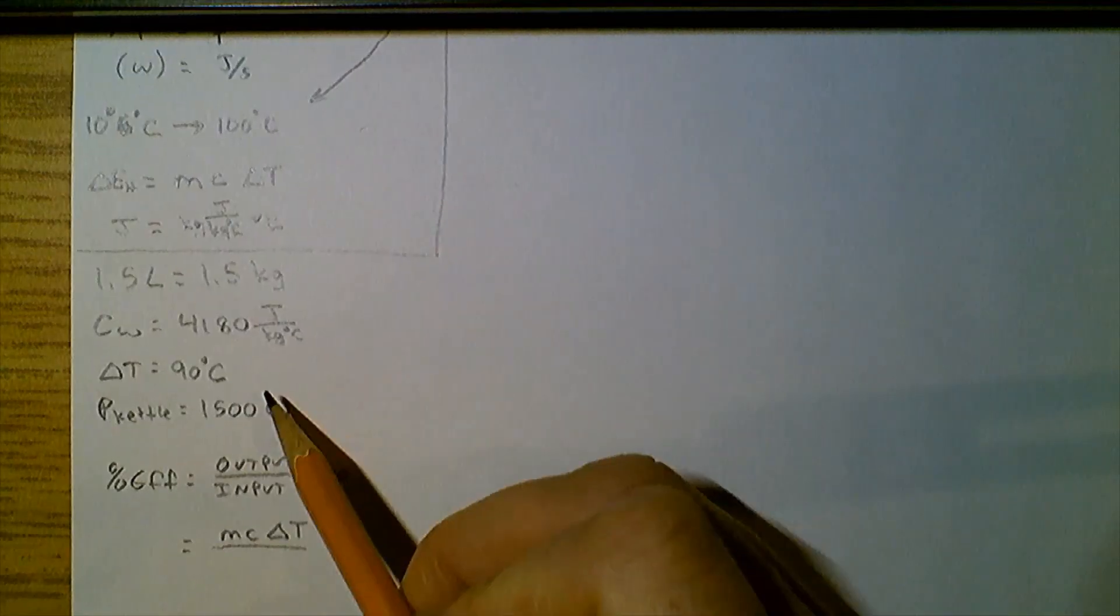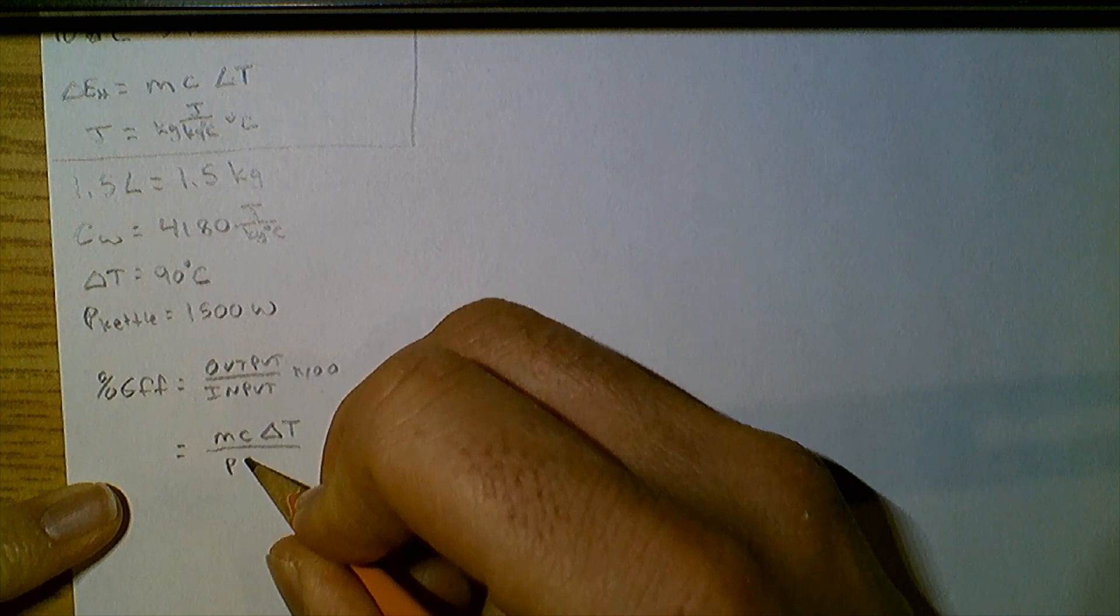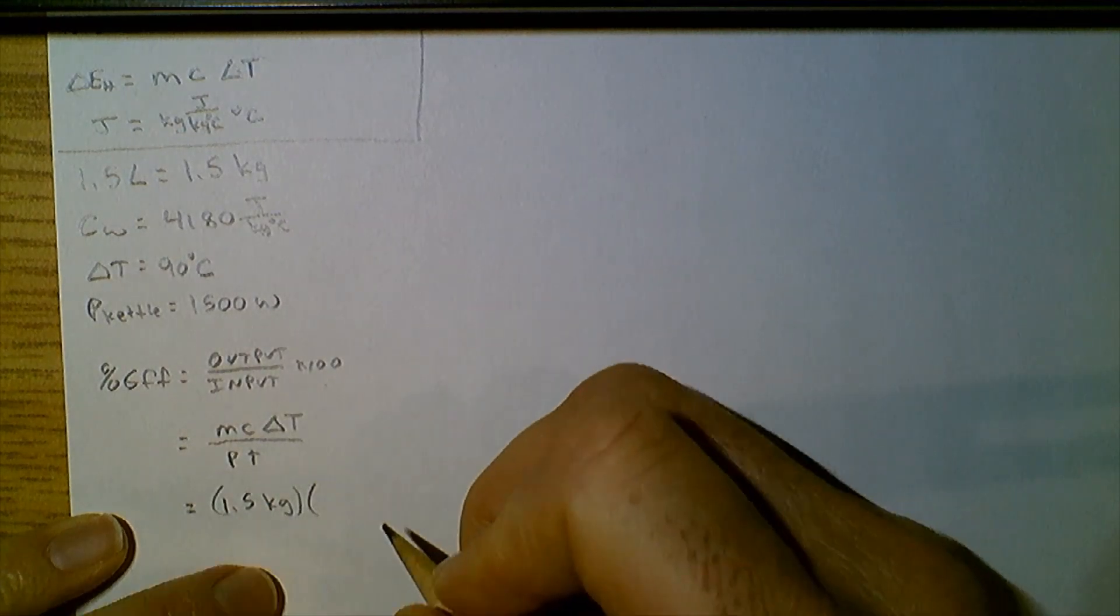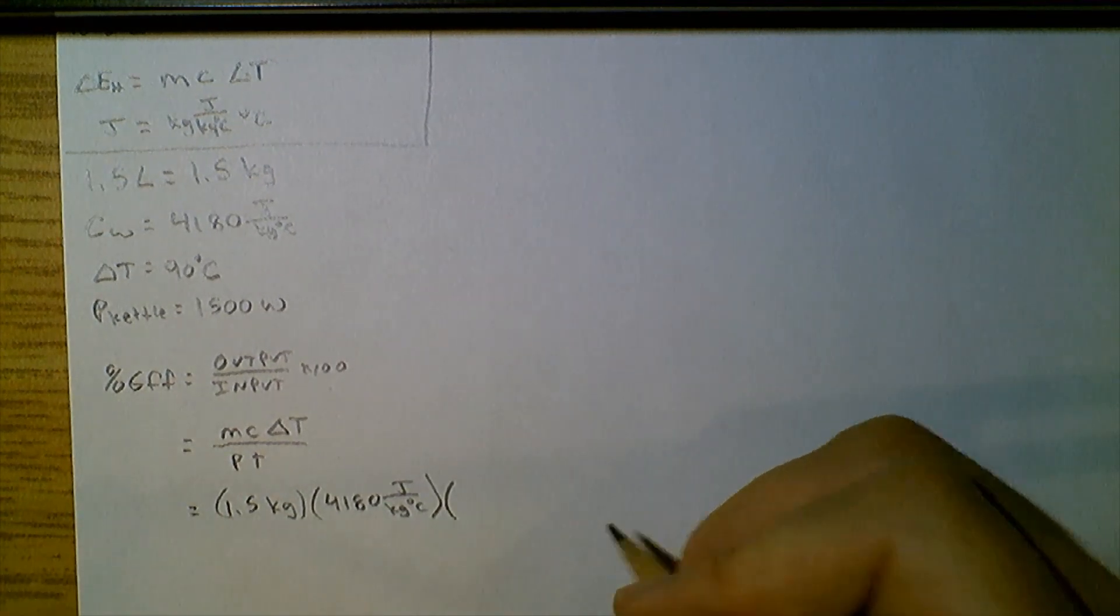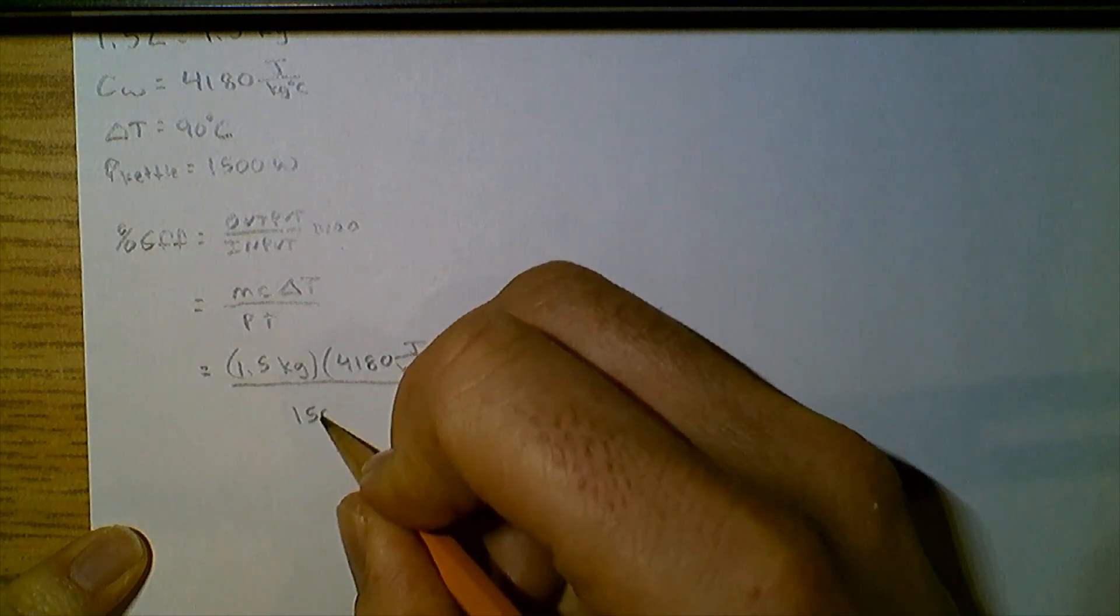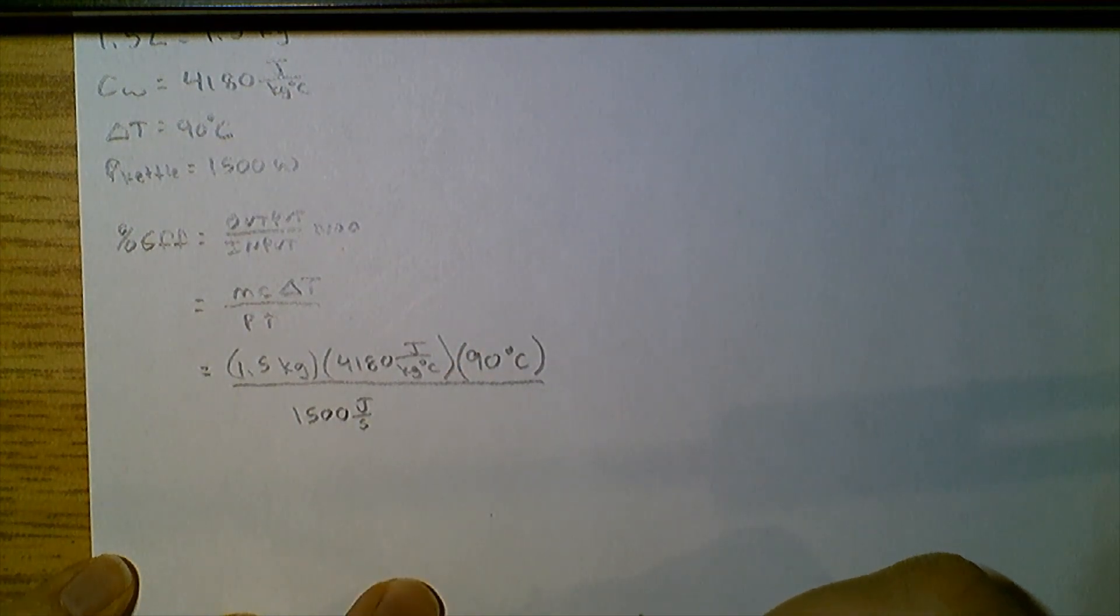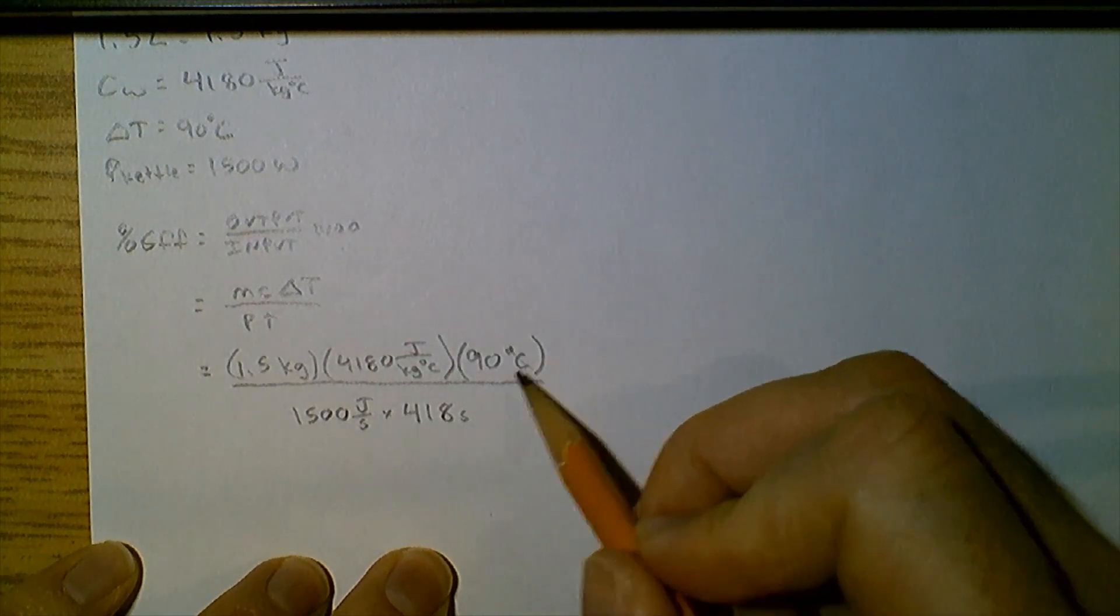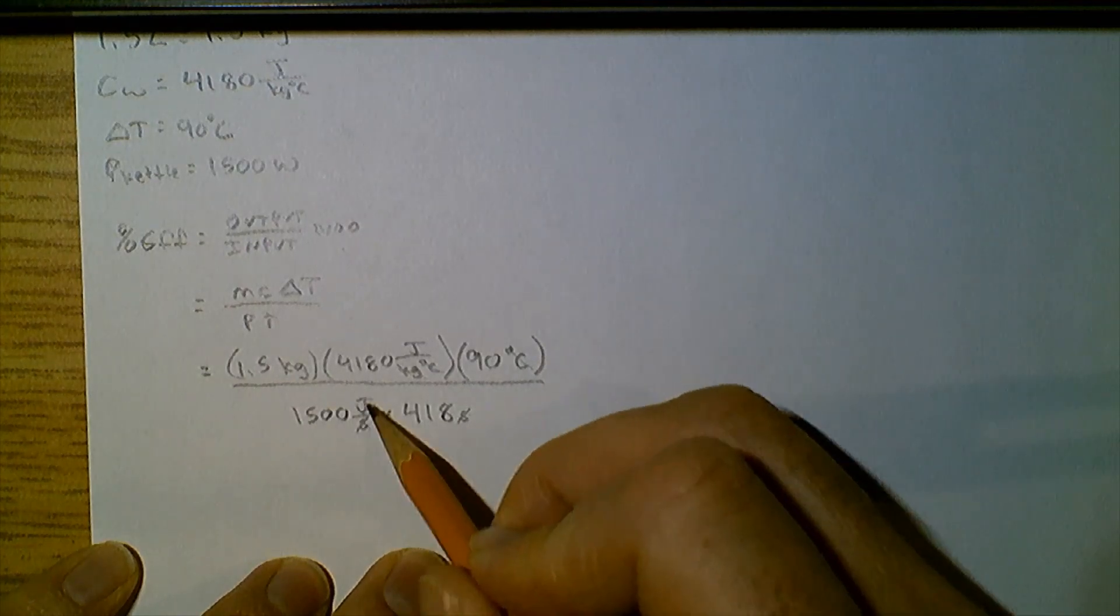And on the bottom, we're going to put our output energy. In this case, that is 1,500 watts, so our power times our time. Let's plug in the numbers. So 1.5 kilograms times 4,180 joules per kilogram degrees Celsius times delta T, which is 90 degrees Celsius. And I'm going to divide that by the power, which is 1,500 joules per second, and the time was 6 minutes and 58 seconds, which is 418 seconds. So let's take a quick look at the units here. Degrees Celsius and degrees Celsius are going to cancel there. Kilograms and kilograms will cancel, and we're left with joules on the top. Seconds divided by seconds will cancel, and we're left with joules on the bottom. So it's going to be a unitless number, and then we multiply by 100 to get our percent.